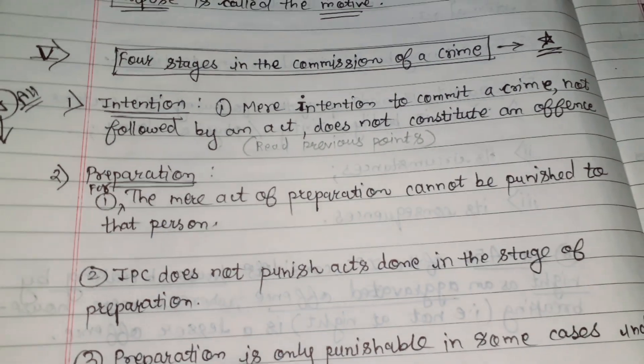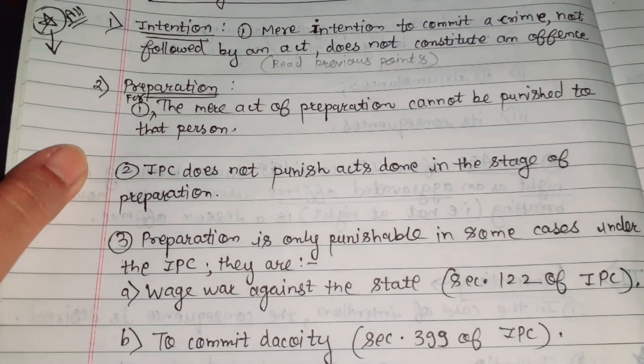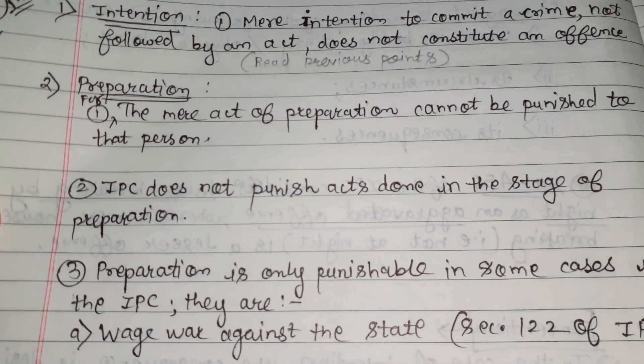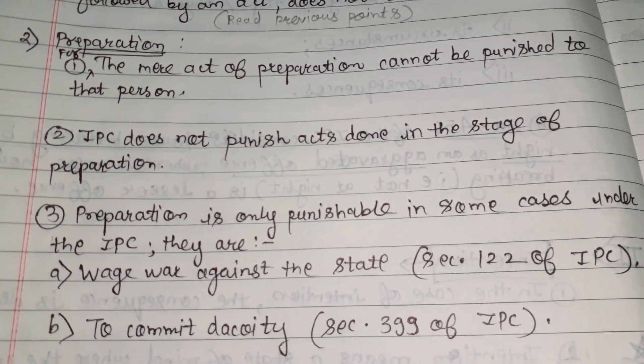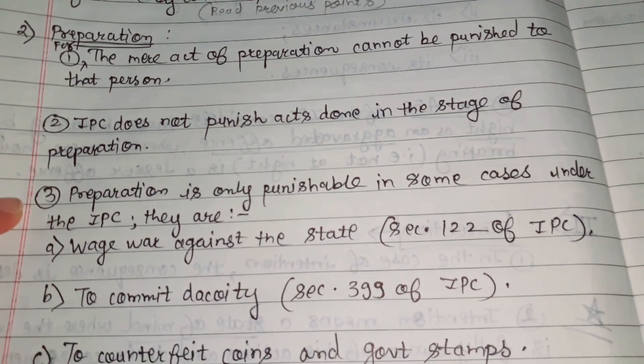Intention is the first stage in the commission of a crime. Second is the preparation. The mere act of preparation cannot be punished to that person. IPC does not punish acts done in the stage of preparation.